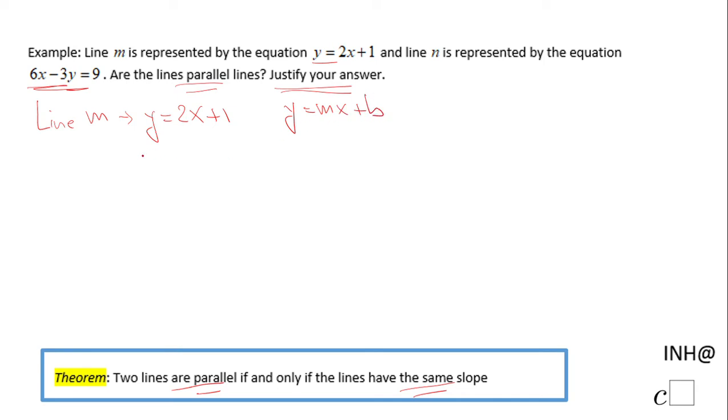We notice the slope of this line, which I'm going to call M1 or M sub 1, is 2, this number.